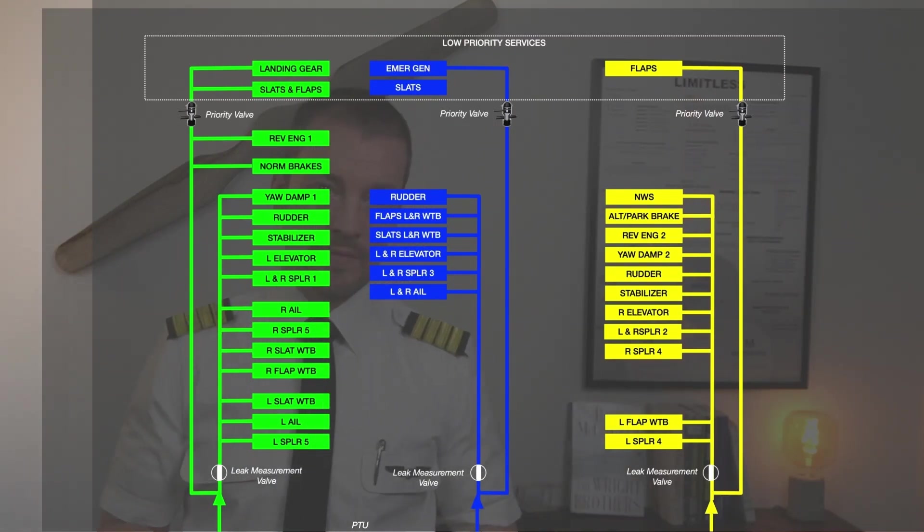If we have limited pressure, limited fluid in the system, the priority valve will close, cutting off hydraulic fluid to these services, maintaining the pressure that is left for flight controls and braking action.